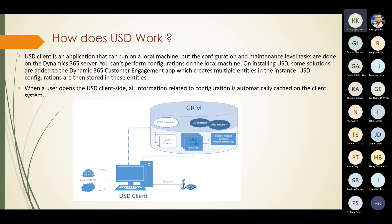All configurations can be stored in these entities. The diagram shows how line of business systems get connected to the USD client. CTI events — telephone, email, and so on — come under the CTI. This connects to the D365 CE app and further to the CRM. Once USD is opened, all configuration information is automatically cached on the client system.